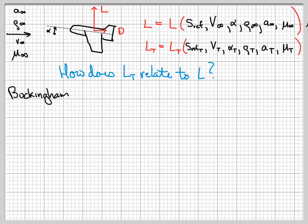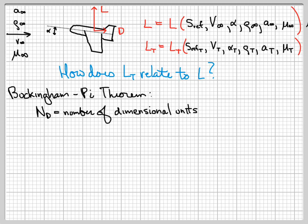What do I mean by dimensional units? That's just the units of measure needed to describe the problem. If you look at all the different parameters — speed of sound, density, viscosity, lift and drag — they are all in units of mass, length, and time; some combination of mass, length, and time. So our dimensional units are mass, length, and time, which means nd equals 3.